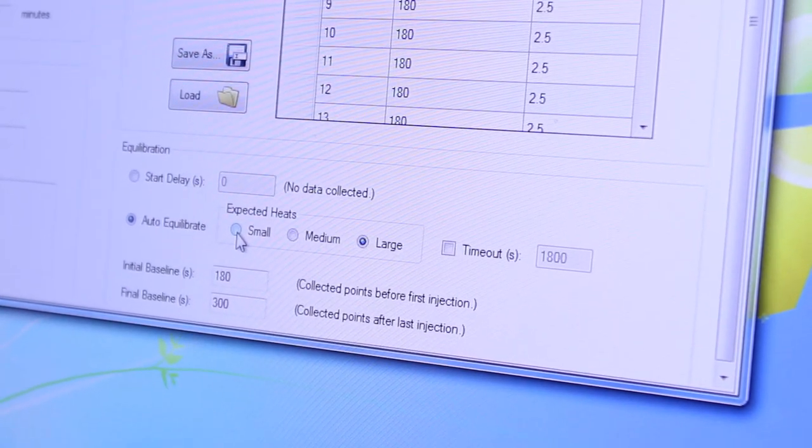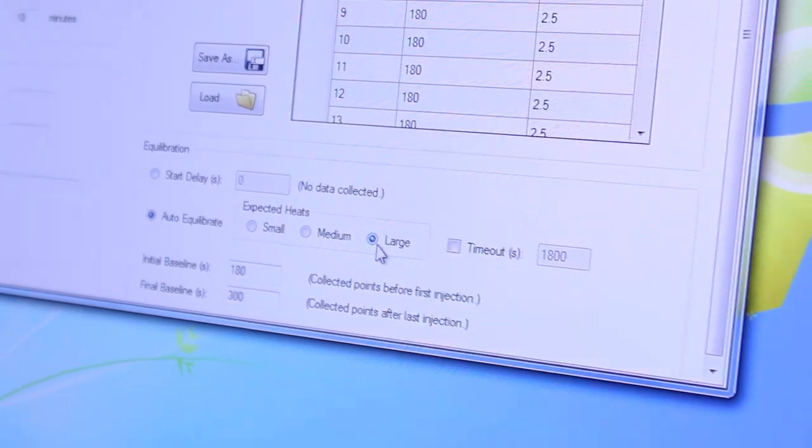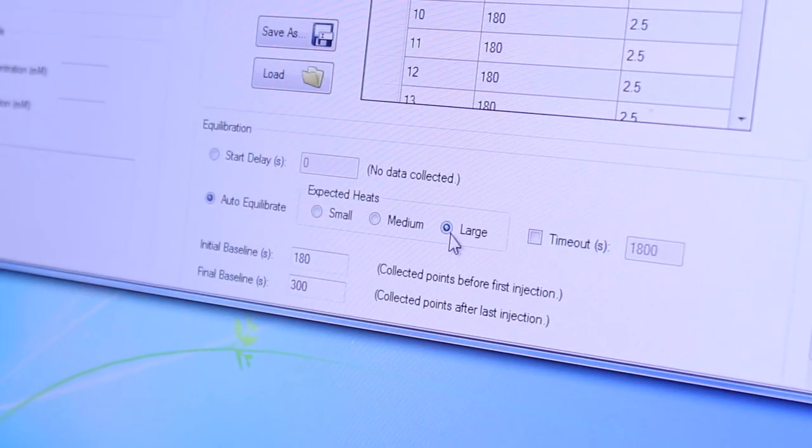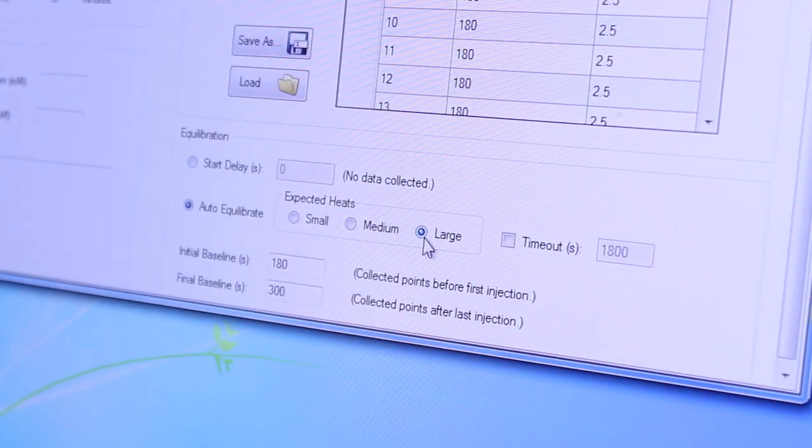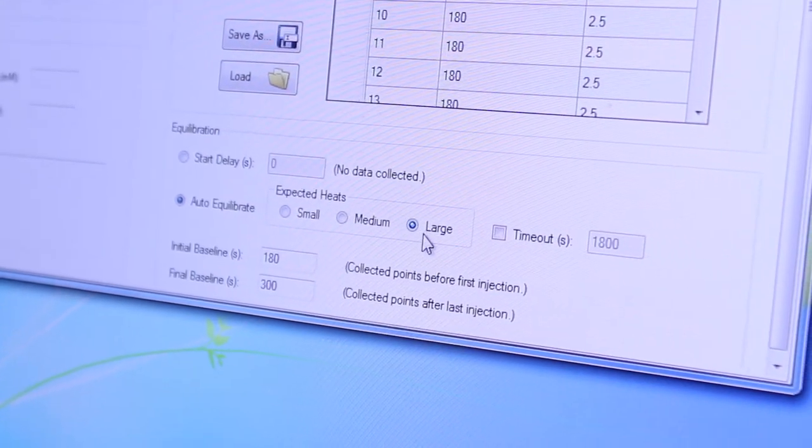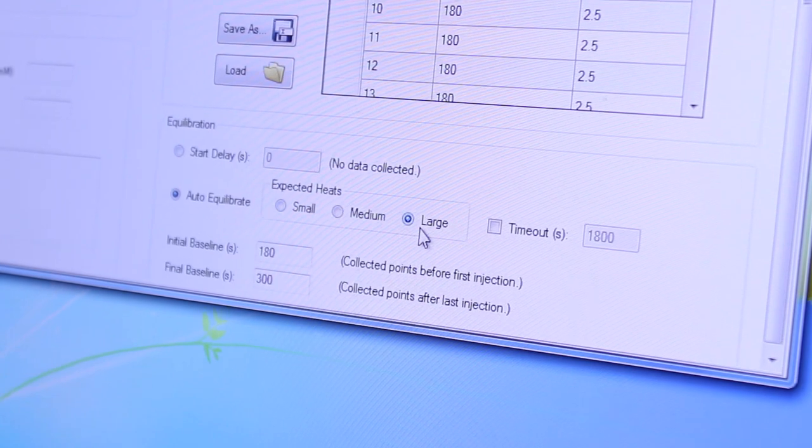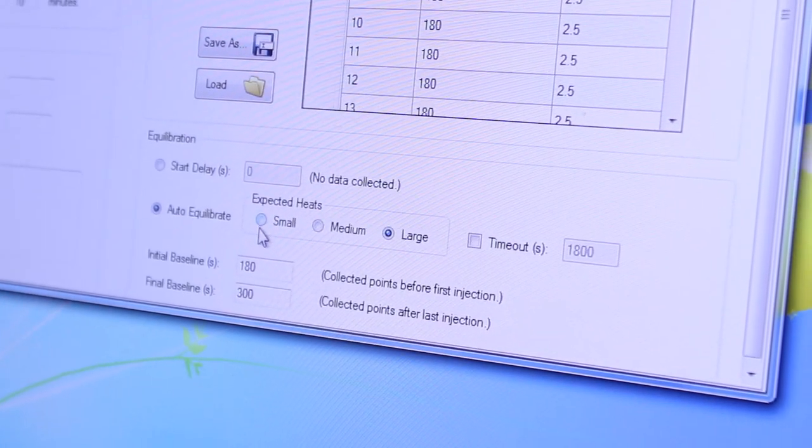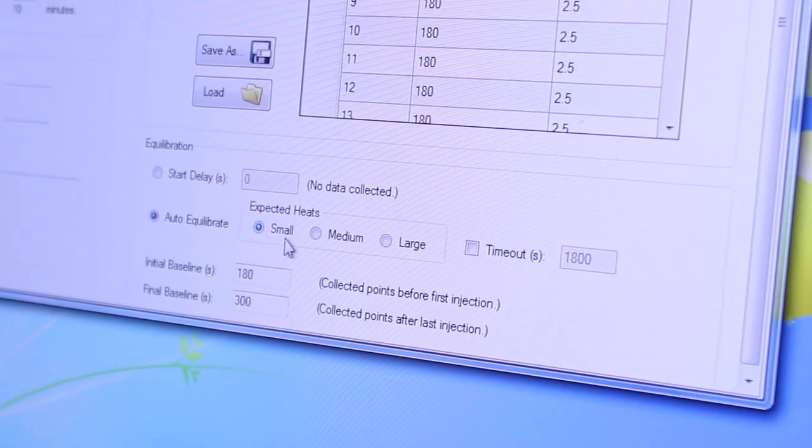The smallest option will wait for the baseline to be the most stable before starting the experiment whereas the largest option will allow the baseline to be somewhat unstable before starting the experiment. You may want this option if you don't want to wait as long before starting the experiment. We'll show you the small option for example.